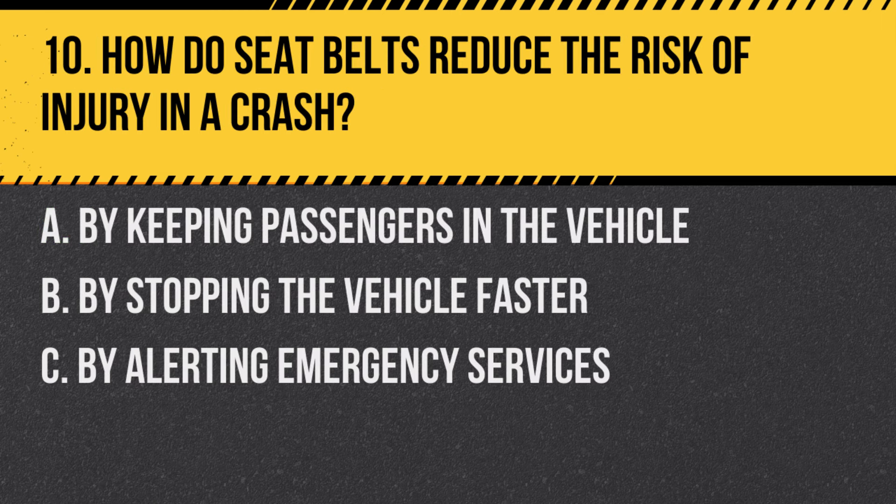Question 10: How do seat belts reduce the risk of injury in a crash? A. By keeping passengers in the vehicle. B. By stopping the vehicle faster. C. By alerting emergency services. Answer: A. By keeping passengers in the vehicle. Seat belts reduce the risk of injury by keeping passengers inside the vehicle and distributing the forces of a collision across stronger parts of the body.